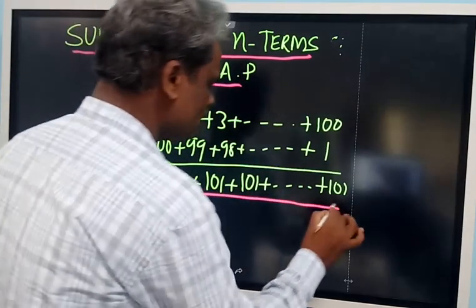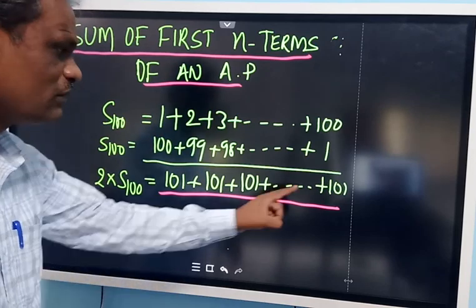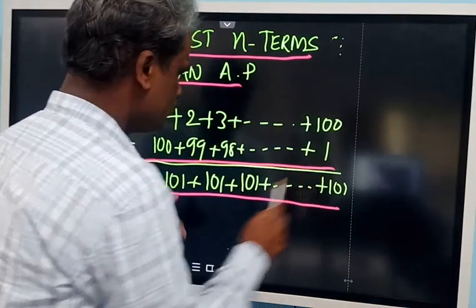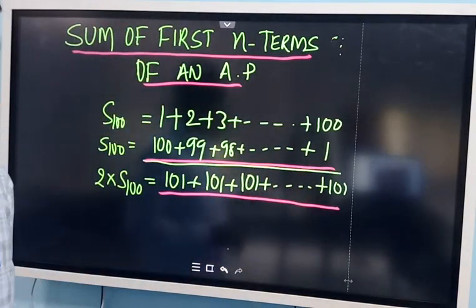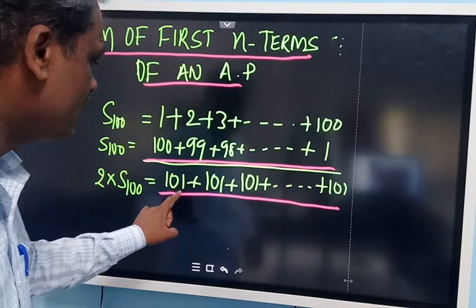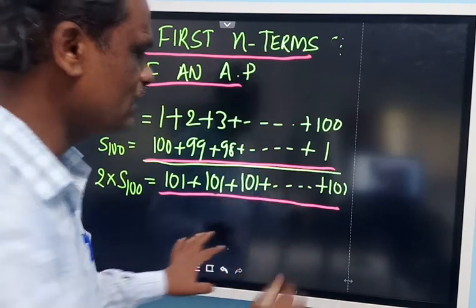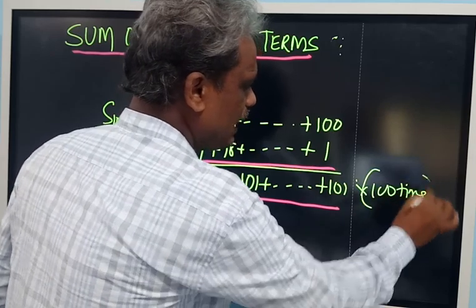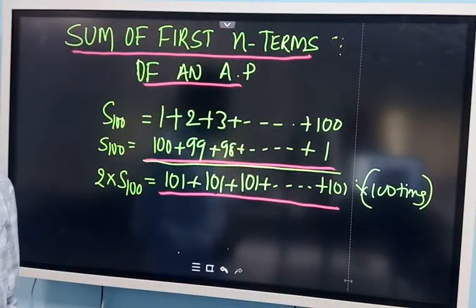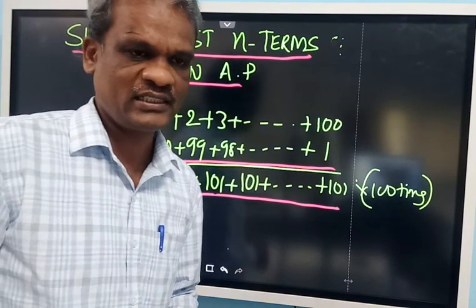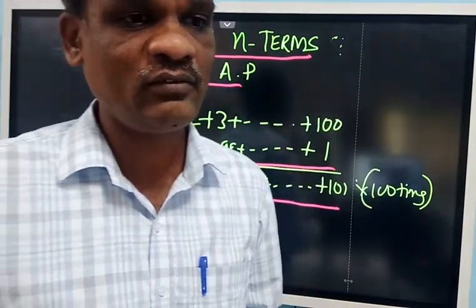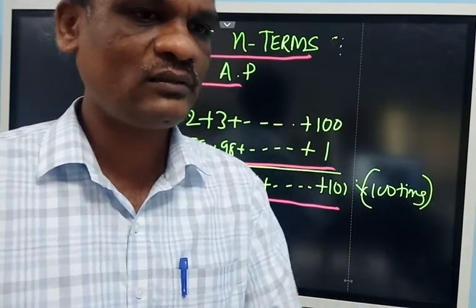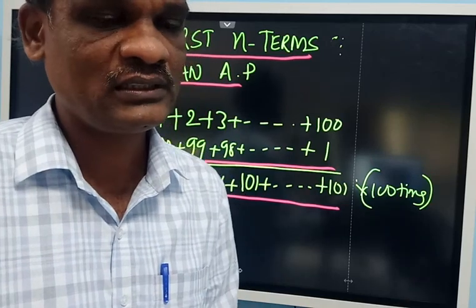So how many 101's will be there in total? There will be 100 of them. You know the simple way of addition is multiplication. So 101 plus 101 plus 101... 100 times means 101 multiplied by 100. If there are 200 101's, it's 101 into 2; if 300, it's 101 into 3. Here we have 100 101's, so two times the sum equals 101 into 100.